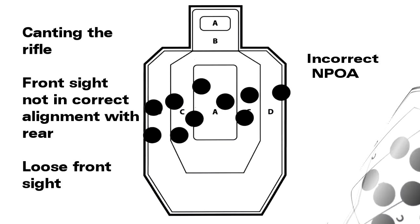Sample target number five. Probable causes: number one, canting the rifle. Number two: front sight not in correct alignment with the rear, but it is displaced horizontally from shot to shot. Number three: a loose front sight.